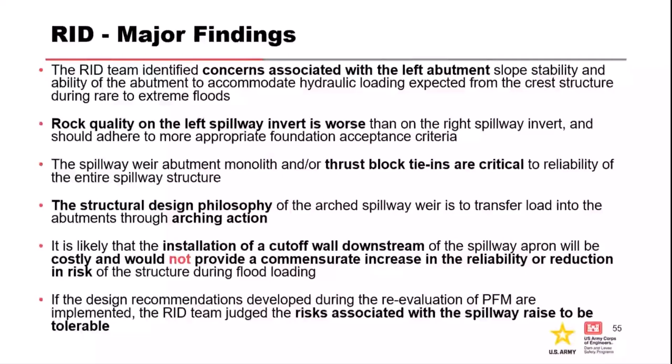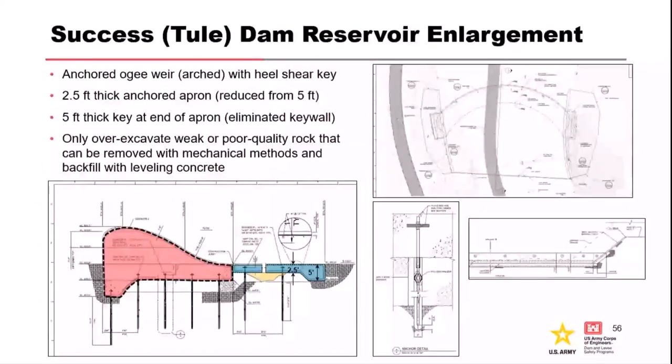We should have increased foundation approval criteria — so maybe some over-excavation: anything you can rip with a ripper, replace with concrete. The spillway abutment and monolith thrust block key ends are critical for an arch structure because all those loads go into the abutment once loaded. If you release those, you change the stress system in the arch — you get cracking, movement, and problems when you take away one abutment. If the design recommendations developed during reevaluation are implemented, the RID team judged that the risks associated with the spillway raise would be tolerable.